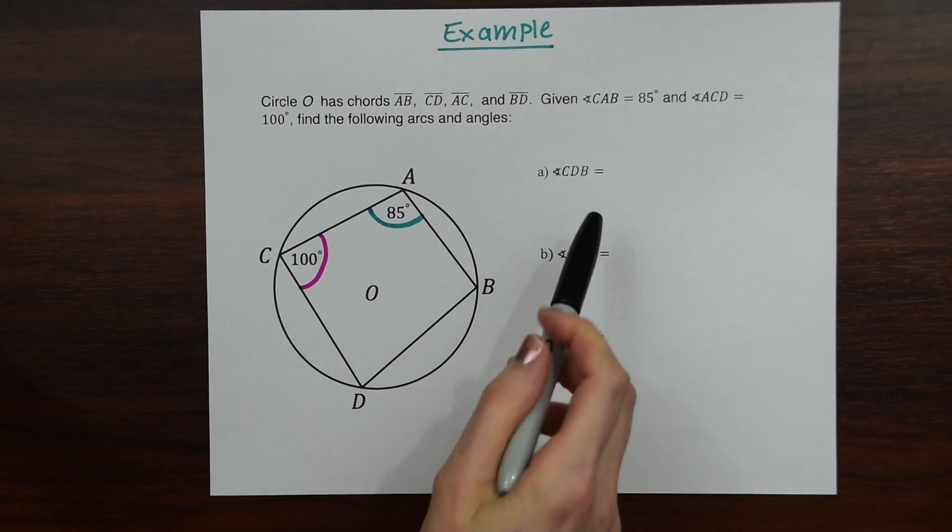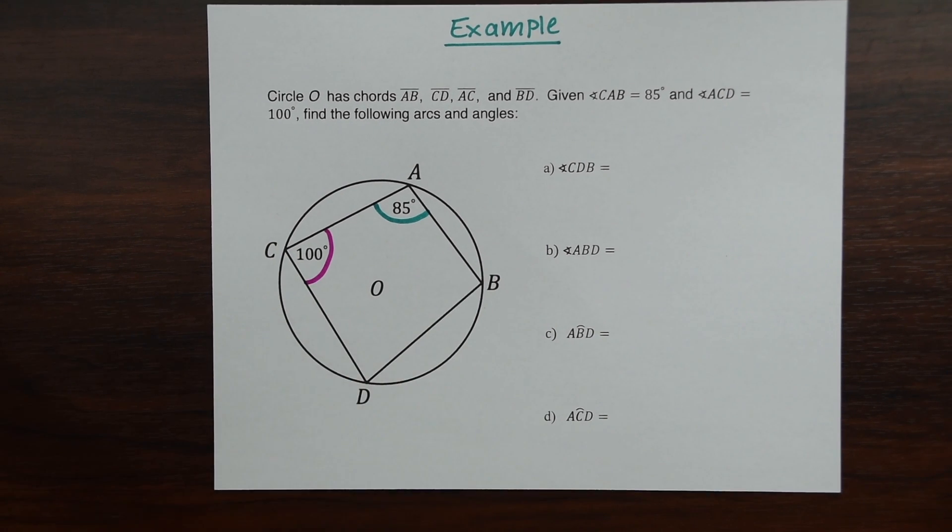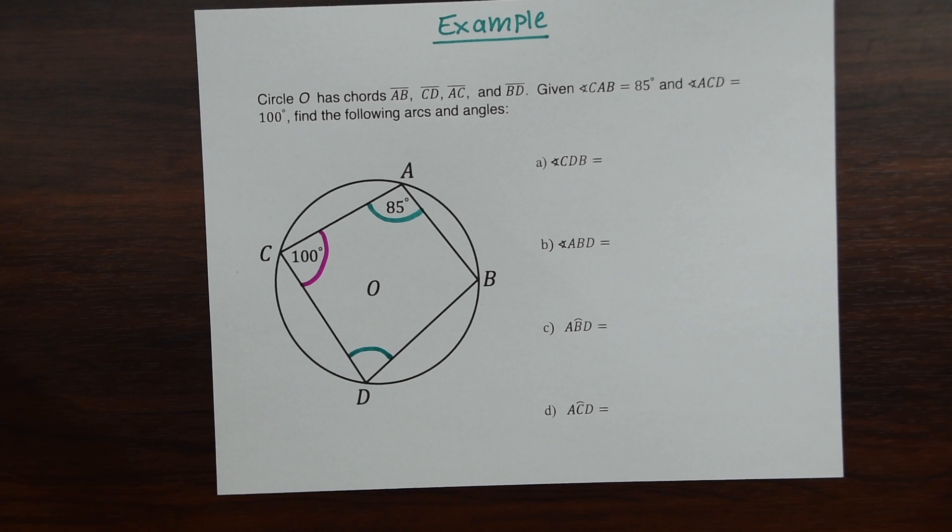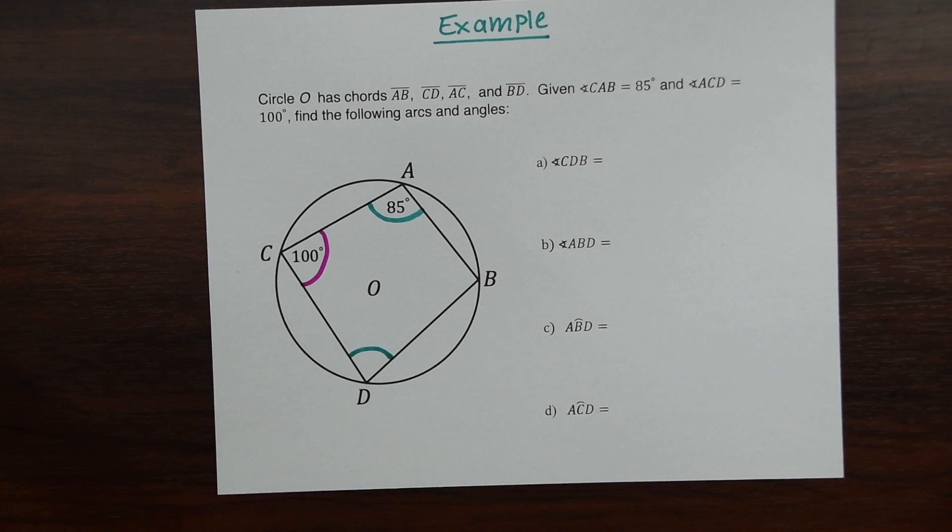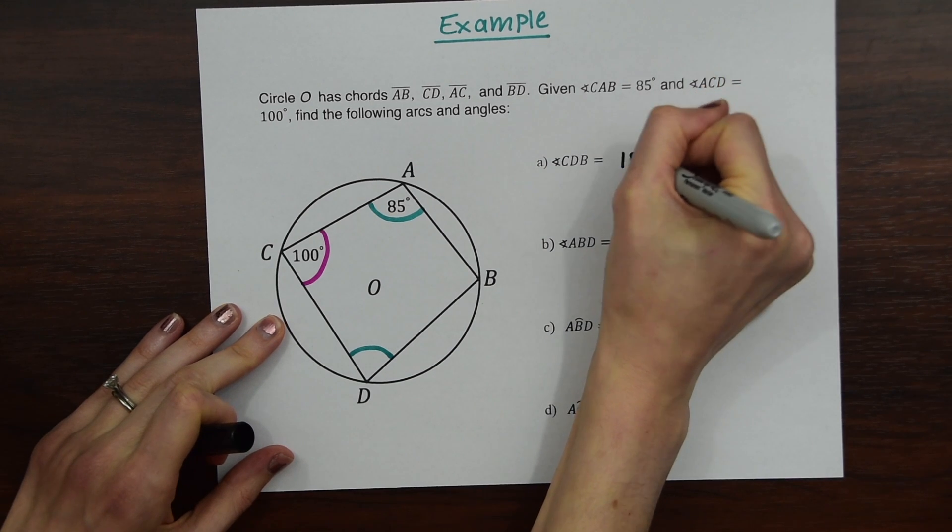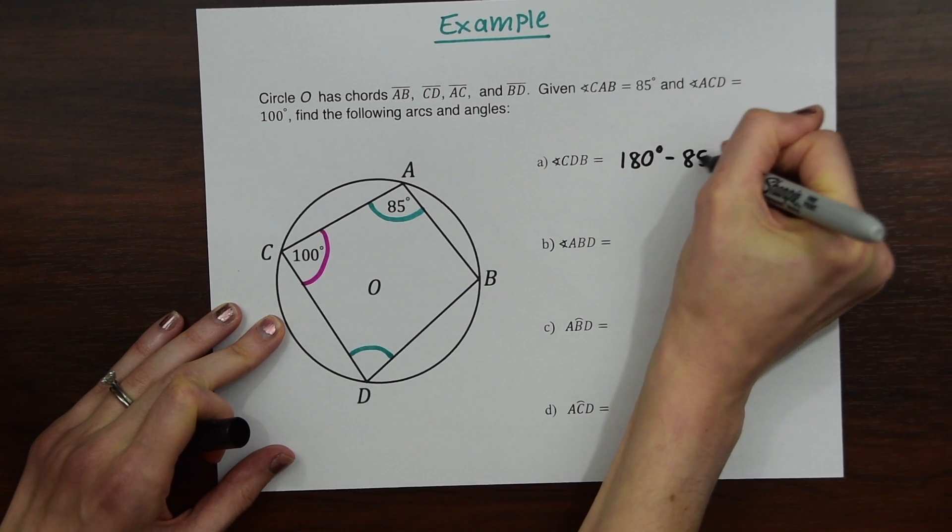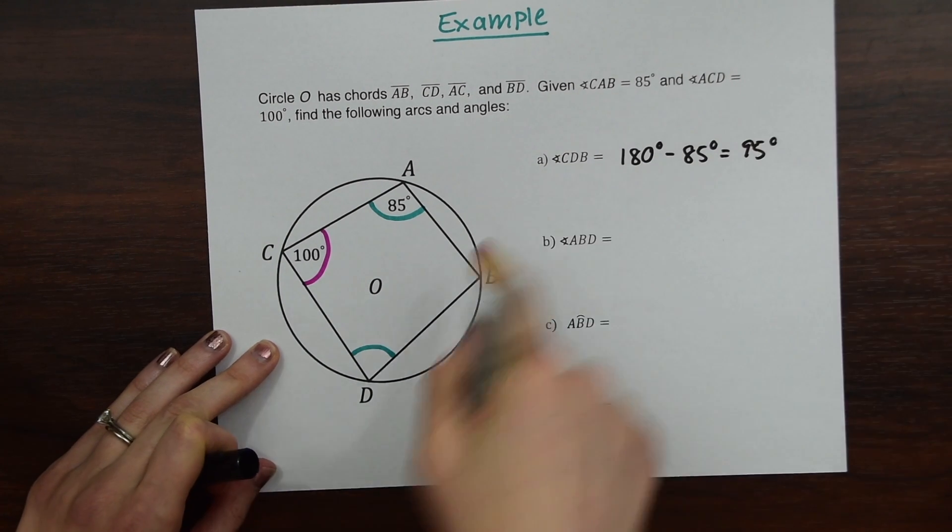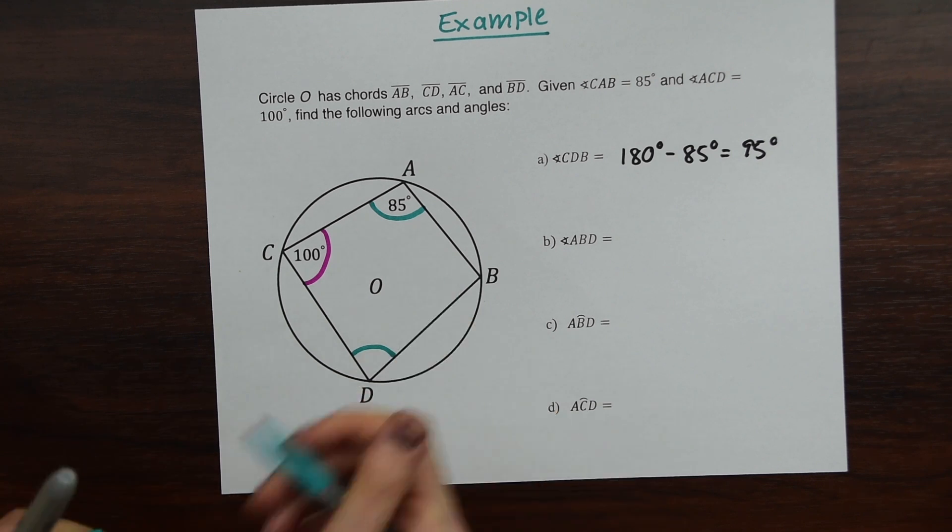So angle CDB, so this angle right here. Remember we just went over quadrilaterals, and when angles are opposite each other they're supplementary. So knowing that, we can take 180 degrees and subtract 85, and then this will give us 95 degrees, which is the value of angle CDB. So we could just fill that in over here.